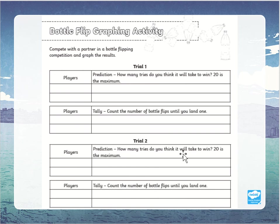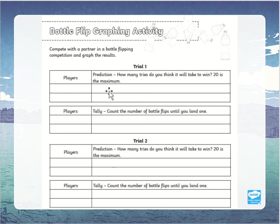You can also do a bottle flipping activity. You can have multiple players or do this on your own. Put the players' names down. Predict how many tries you think it will take to win the bottle flipping competition — 20 is the maximum. Then tally and count the number of bottle flips until you land one. Try to predict how many times you think it will take for your bottle flip to land.